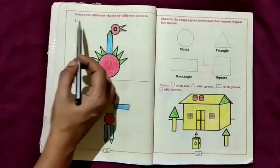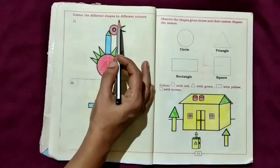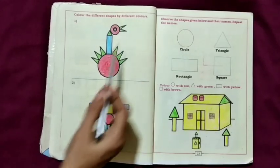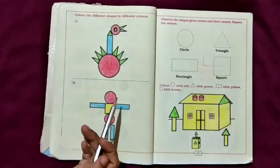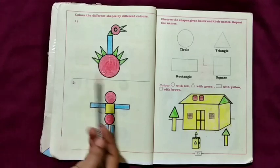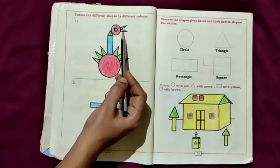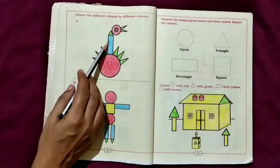Color the different shapes by different colors. Choose four different colors for four different shapes: circle, triangle, rectangle, square.